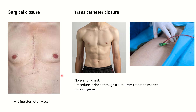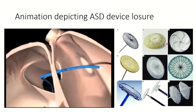After surgical closure there is a midline sternotomy scar on the chest. With transcatheter closure, there is no scar on the chest — everything is normal. The procedure is done through the groin with a catheter around 3 to 4 mm thick. The resulting scar is very tiny — about the size of a mark made with a ballpoint pen.